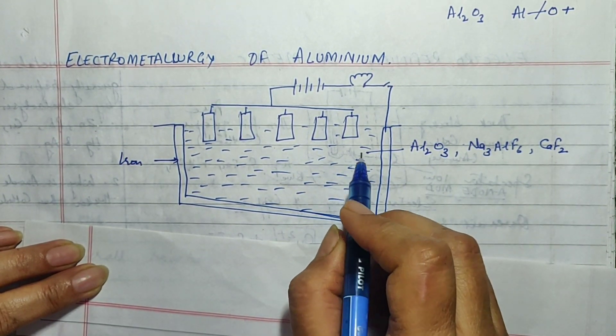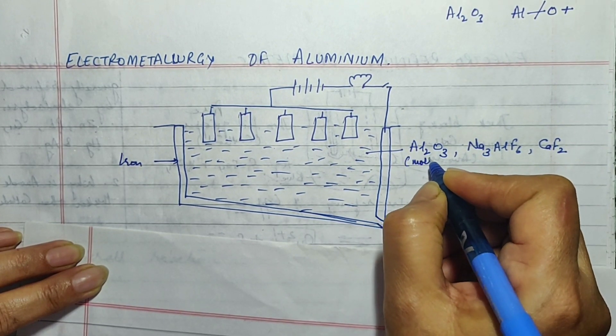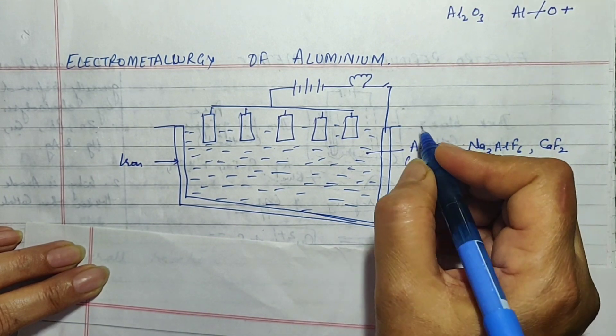Al2O3 is in the fused form, fused means it is in the molten state. In the molten state we take alumina, this is called alumina.